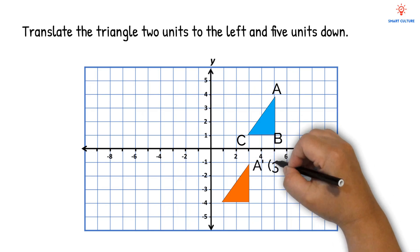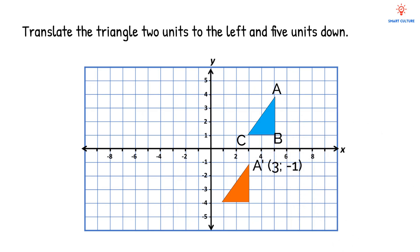So now, the points of A' would be 3 and minus 1. The points of B' would be 3 and minus 4. And the points of C' would be 1 and minus 4.